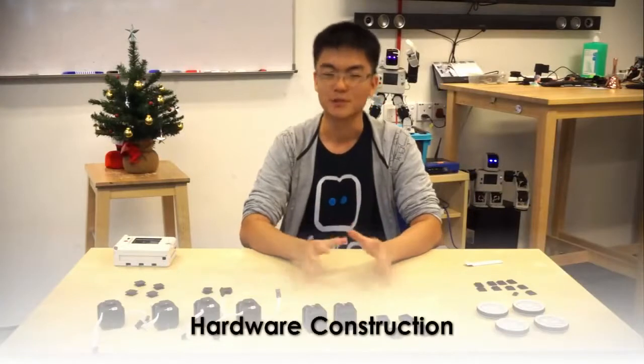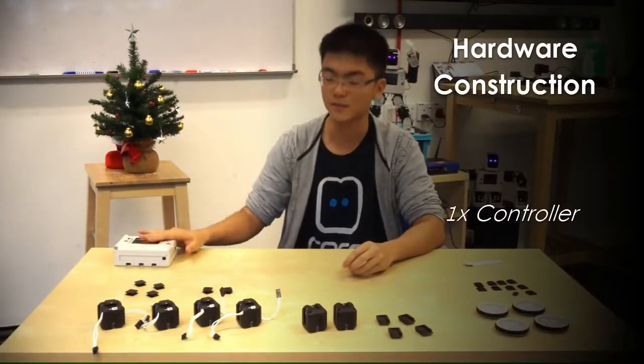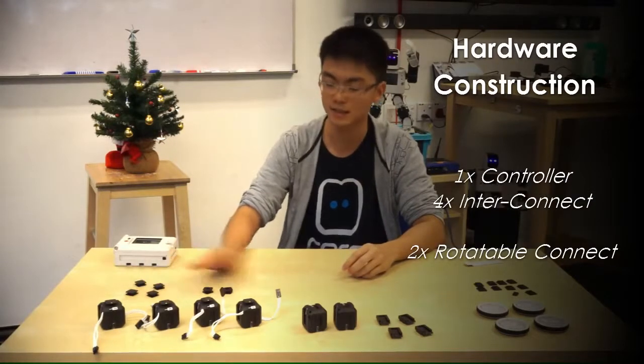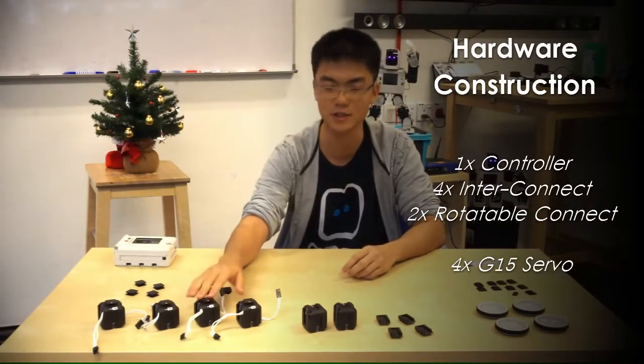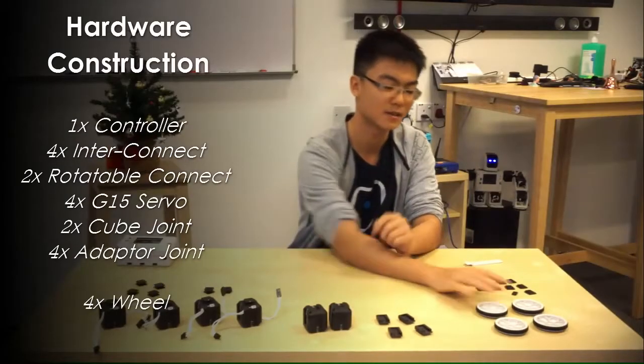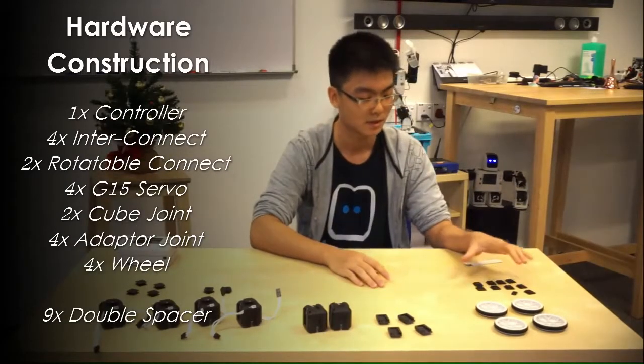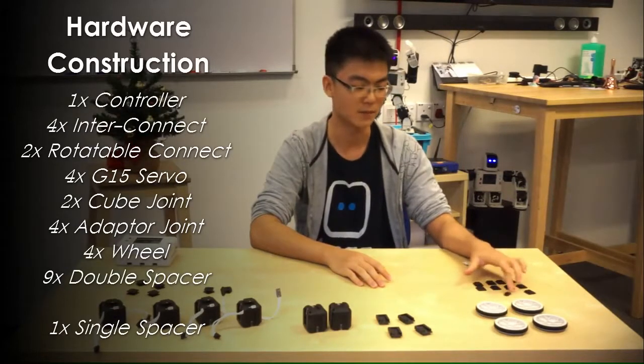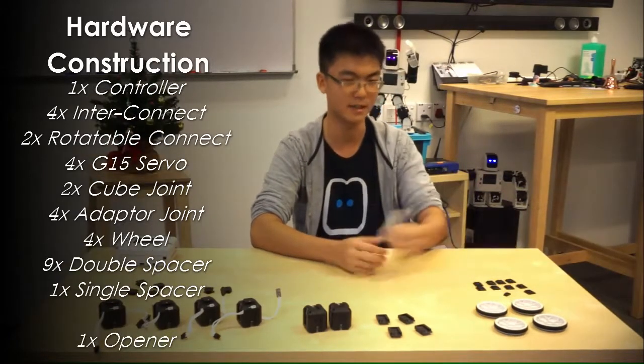Now to build this simple robot, we need all the following parts. One controller, four interconnects, two rotatable connects, four servos, two cube joints, four adapter joints, four wheels, nine double spacers and one single spacer and the opener.